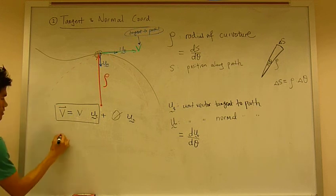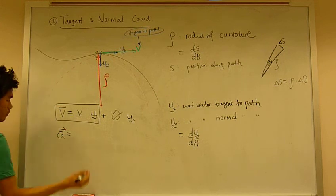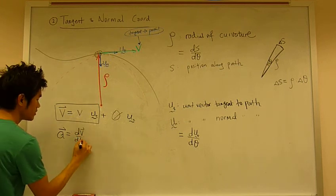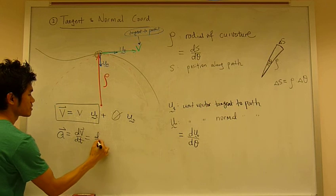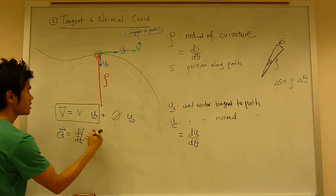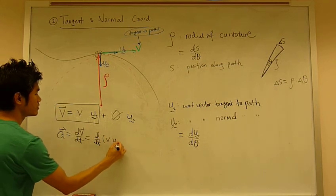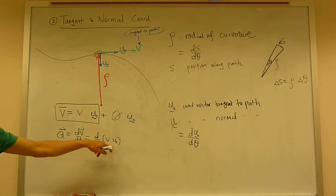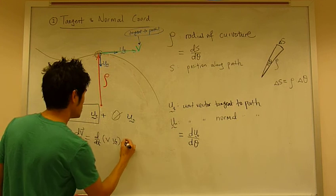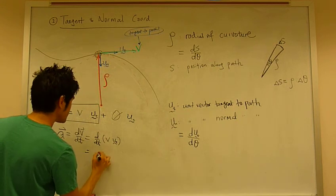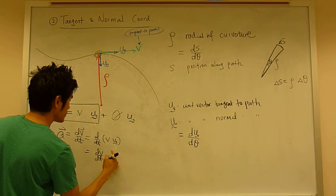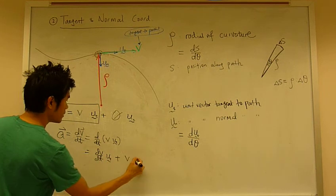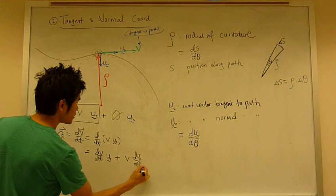What about acceleration? Well, acceleration by definition equals the derivative of the velocity vector. Now, v vector equals this guy right here, v ut. This is a variable, those are variables. So you can use chain rule. So this equals dv/dt ut plus v times dut/dt.